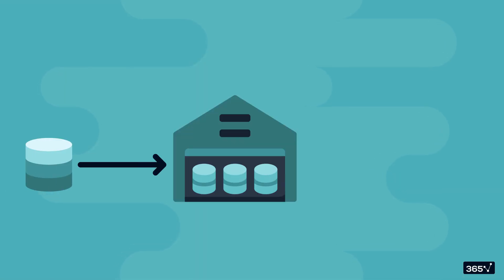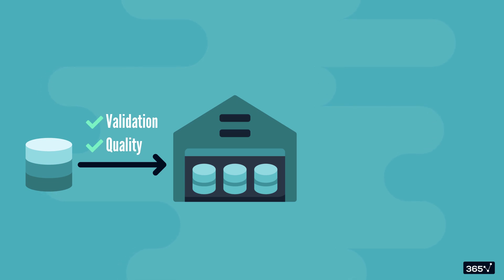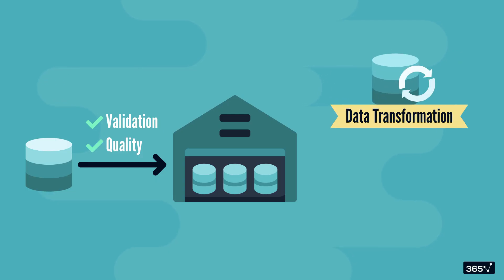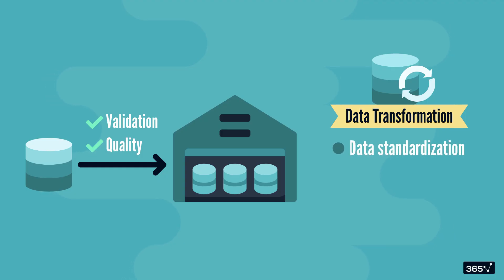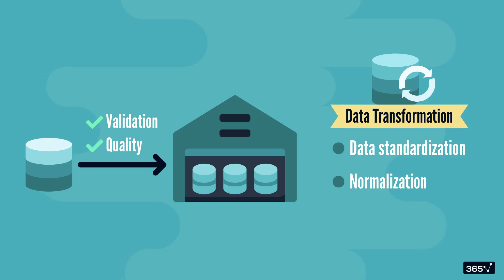Once the data is loaded into the warehouse, and it has cleared the validation and quality checks — confirming data is clean and of good quality — there are some transformation steps that help make the data organized and easy to work with downstream. Two immediate next steps are data standardization and normalization, which are key processes that further enhance data consistency.